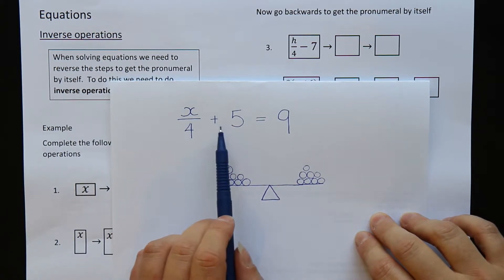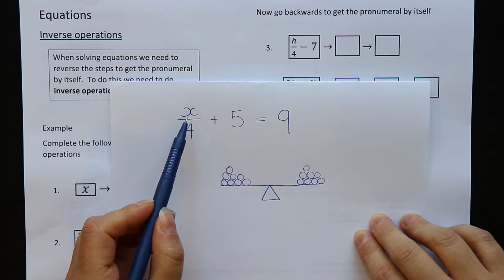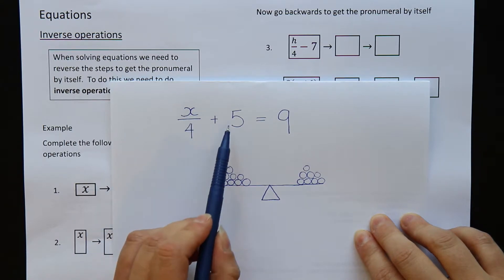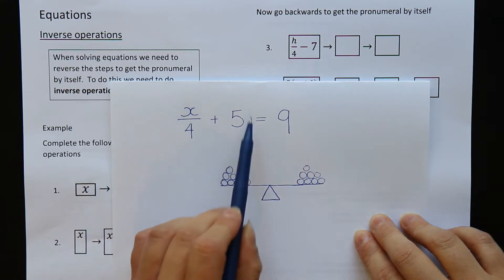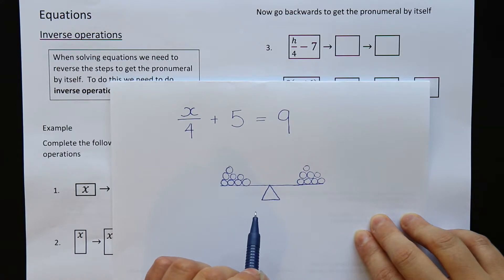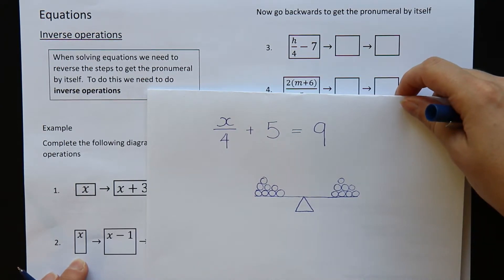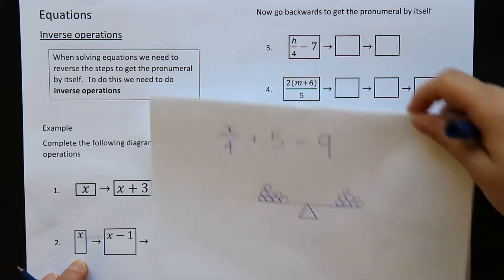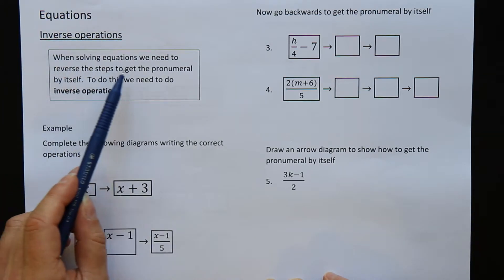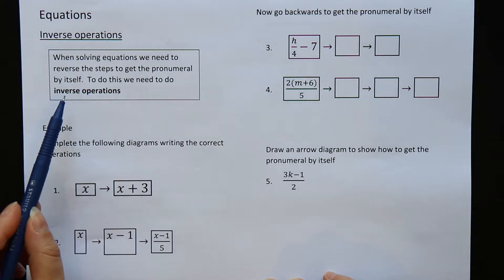So when I have an equation here to solve it, what I'm trying to do is I'm trying to get the x value by itself. I want to do things to my equation to get the x by itself — I want to move some numbers away from it so that the only thing left on this side of the equation would be the x. And to do that we need to do inverse operations. So before we solve any equations — we're not going to actually solve any equations today — we're just going to practice learning what inverse operations are. When solving equations we need to reverse the steps to get the pronumeral by itself. To do this we need to do inverse operations.